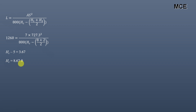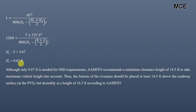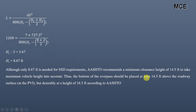This is the clearance height to provide adequate stopping sight distance under this underpass. However, AASHTO has recommended a minimum clearance height of 14.5 feet to take the maximum vehicle height into account, since some vehicles may be taller than 8.67 feet. Therefore, the minimum clearance height is 14.5 feet, and we must place the bottom of this overpass at least 14.5 feet above the roadway surface at the PVI. The desired height, according to AASHTO, is 16.5 feet.